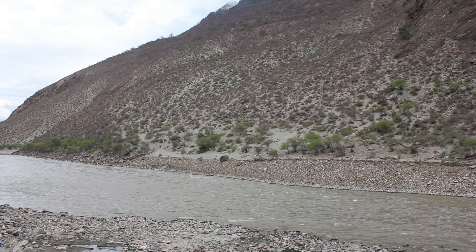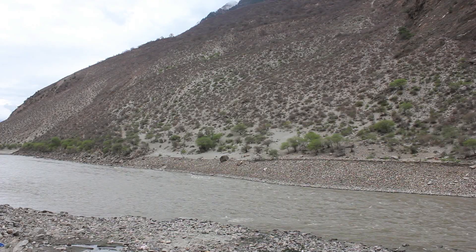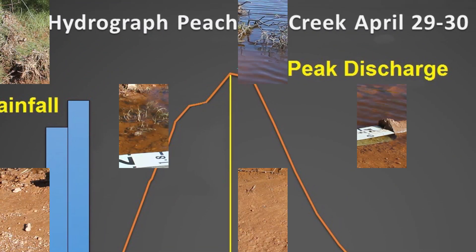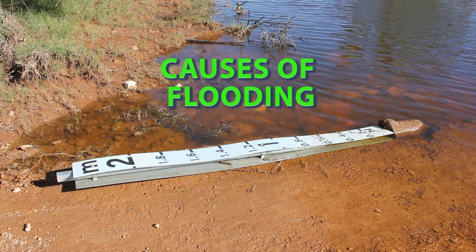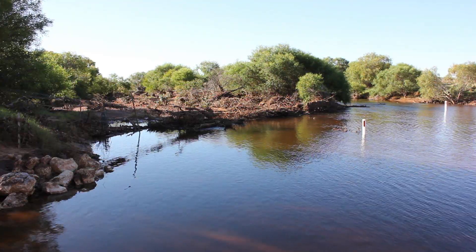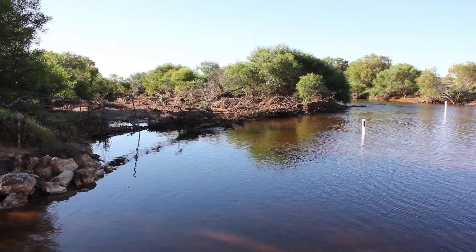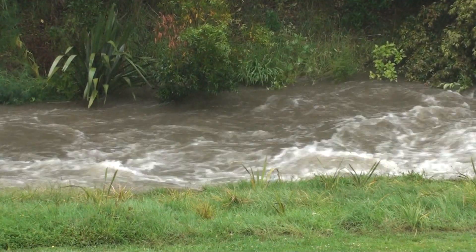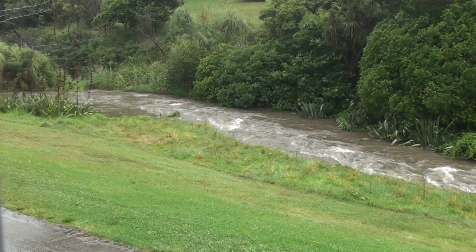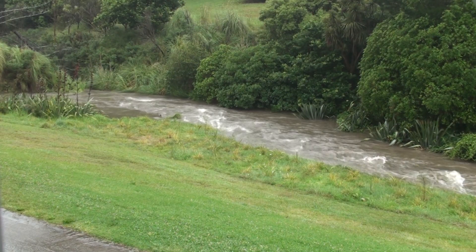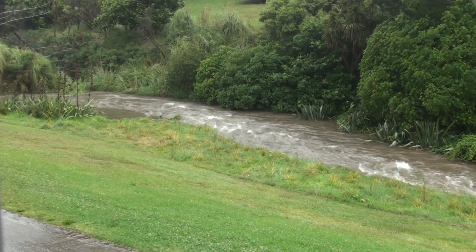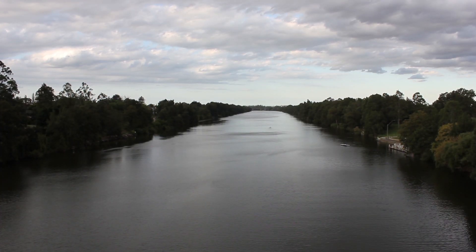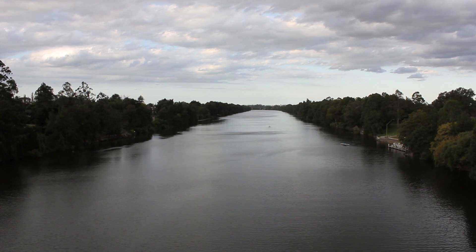Hydrographs in catchment areas with little vegetation and steep slopes will show the peak discharge rise quickly. Floods occur when a river bursts its bank and the water overflows onto the flood plain. Generally, flooding is caused by heavy rain. The faster the rainwater enters the river channel, the more likely it is going to flood. The following factors may further encourage flooding.